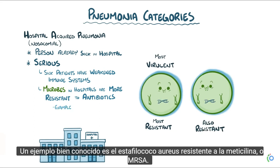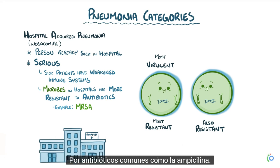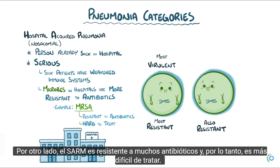A well-known example is Methicillin-resistant Staphylococcus aureus, or MRSA. Non-resistant Staph aureus can cause pneumonia and other infections, but it can be killed by common antibiotics like ampicillin. MRSA, on the other hand, is resistant to many antibiotics and is therefore harder to treat.